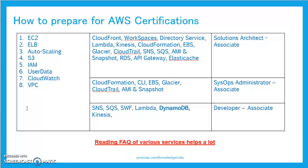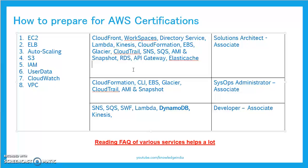Moving to the right-hand side, in the Solutions Architect exam you'll notice more services listed compared to the other two. It doesn't mean it's more difficult — the breadth and depth of services simply differ. For Solutions Architect you need to understand CloudFront, Workspaces, its integration with Directory Service, Lambda, Kinesis, CloudFormation, EBS, Glacier, CloudTrail, SNS, SQS, AMI and Snapshots, RDS, API Gateway, and ElastiCache.